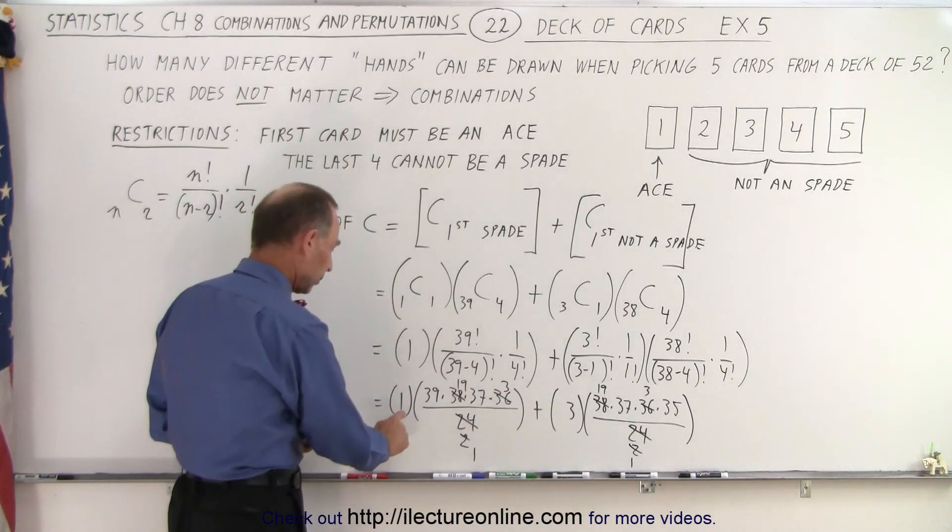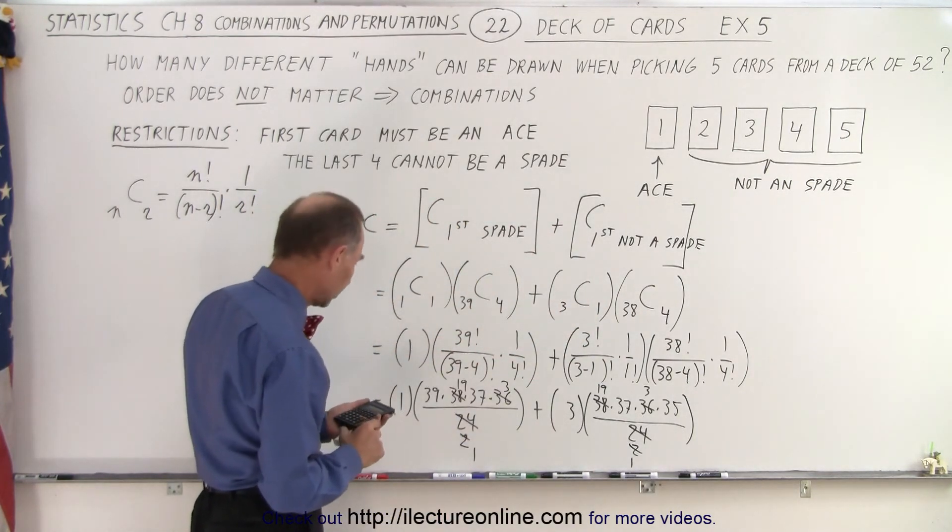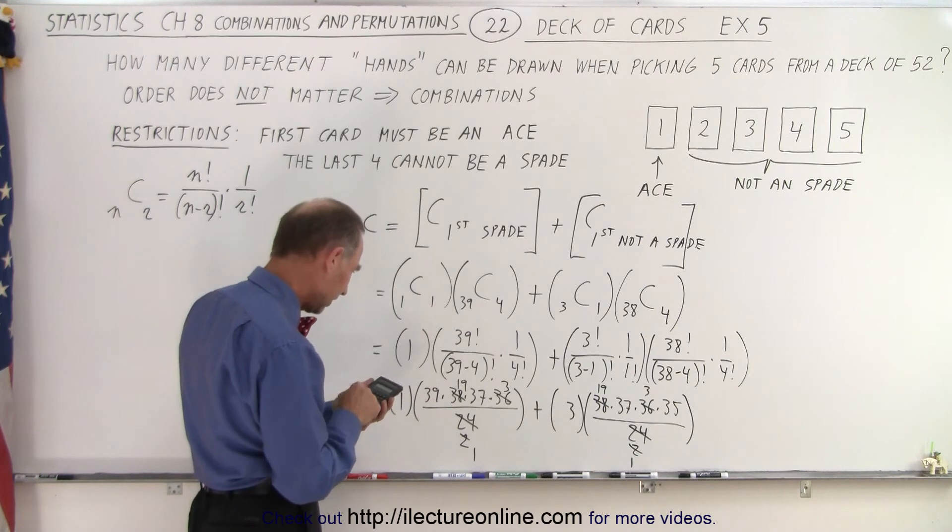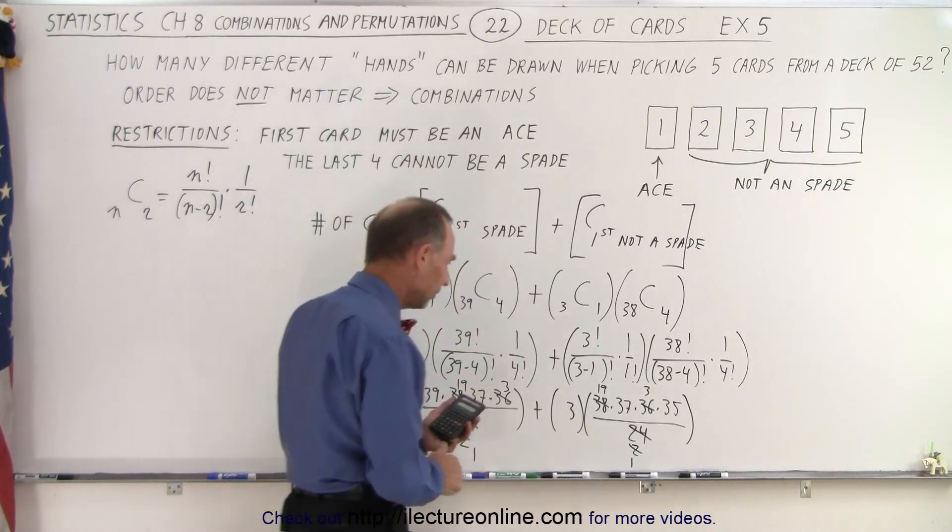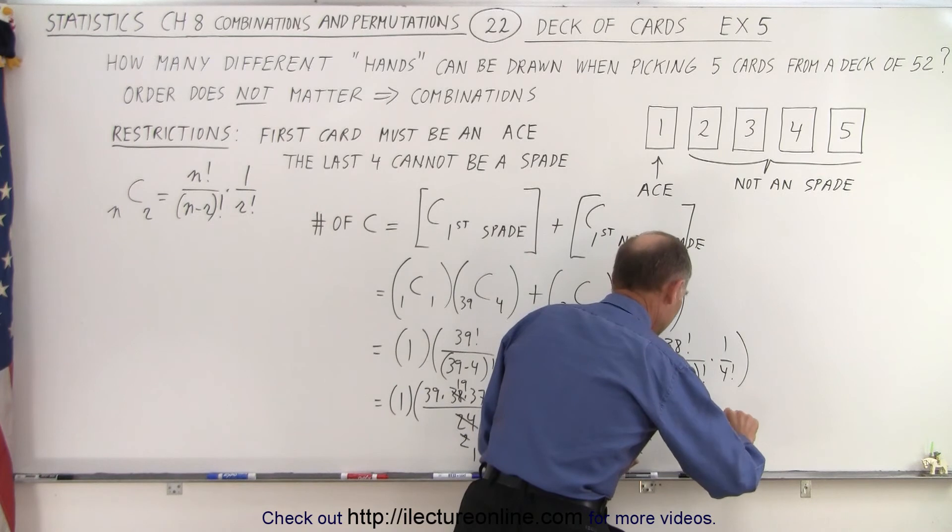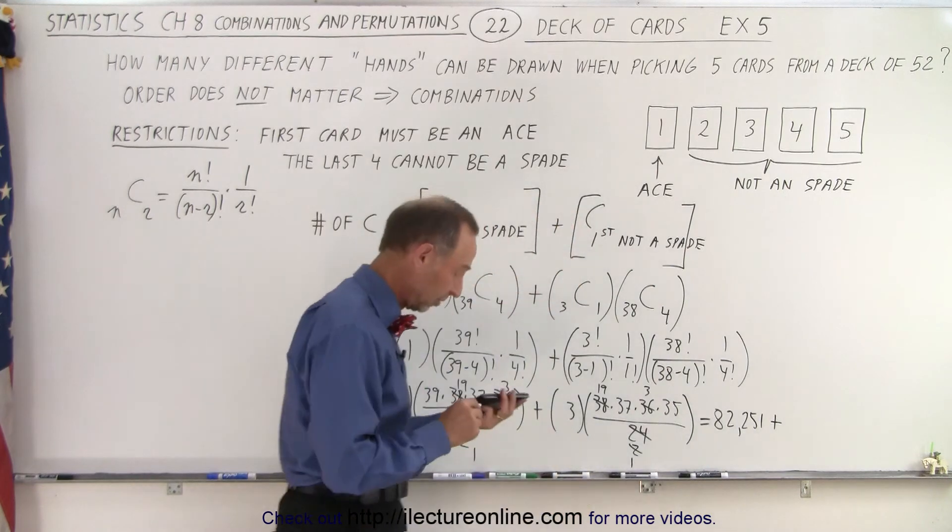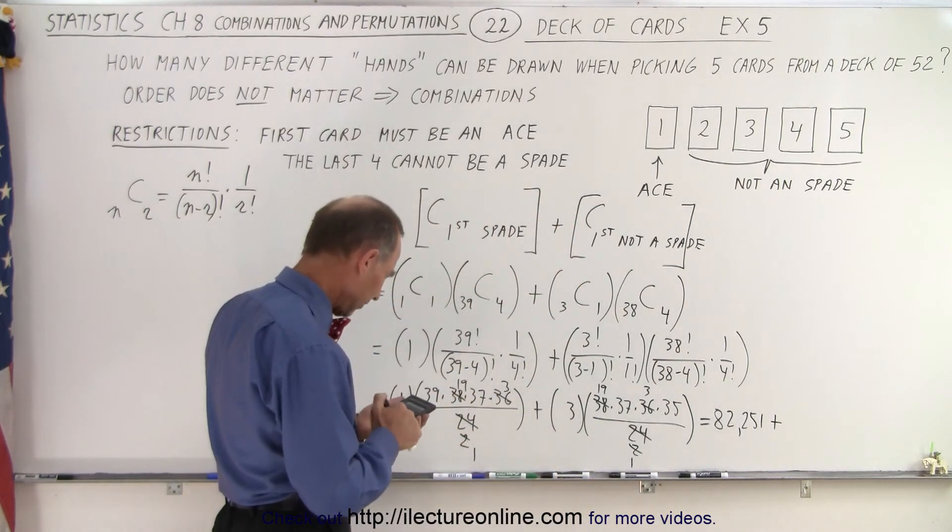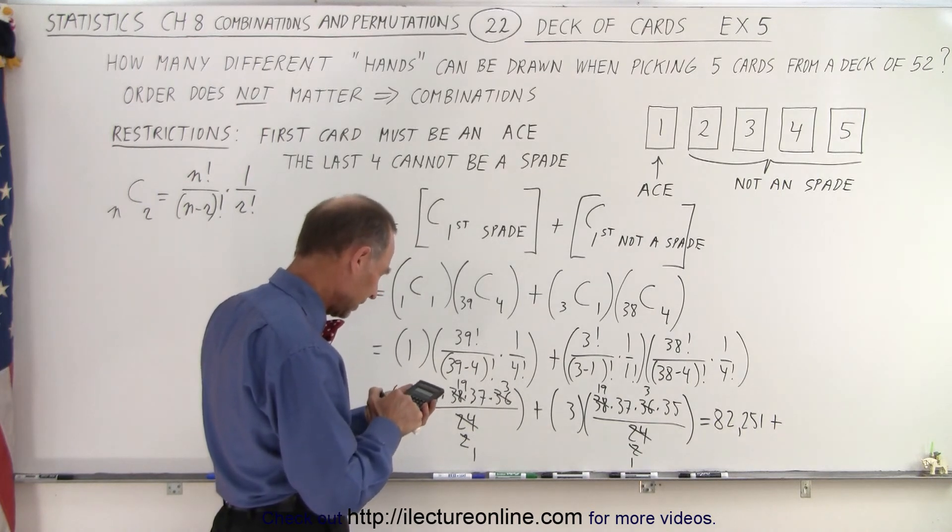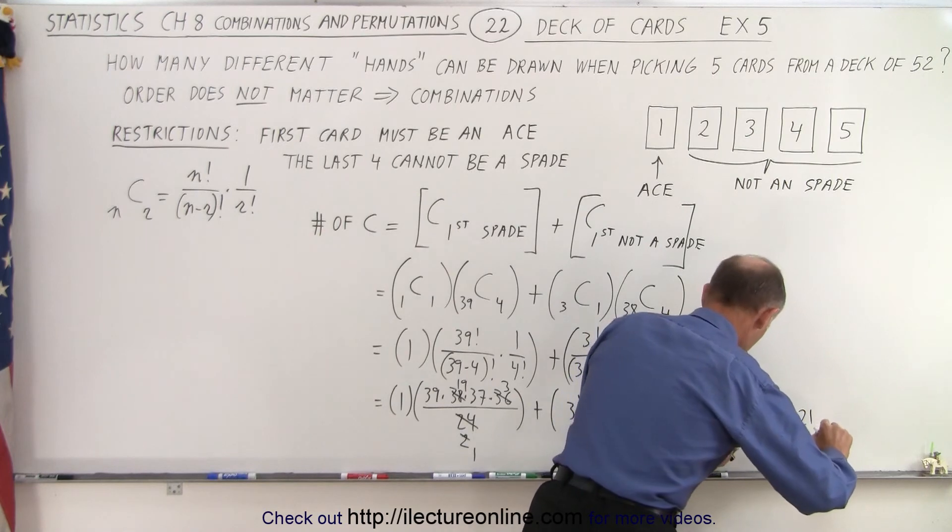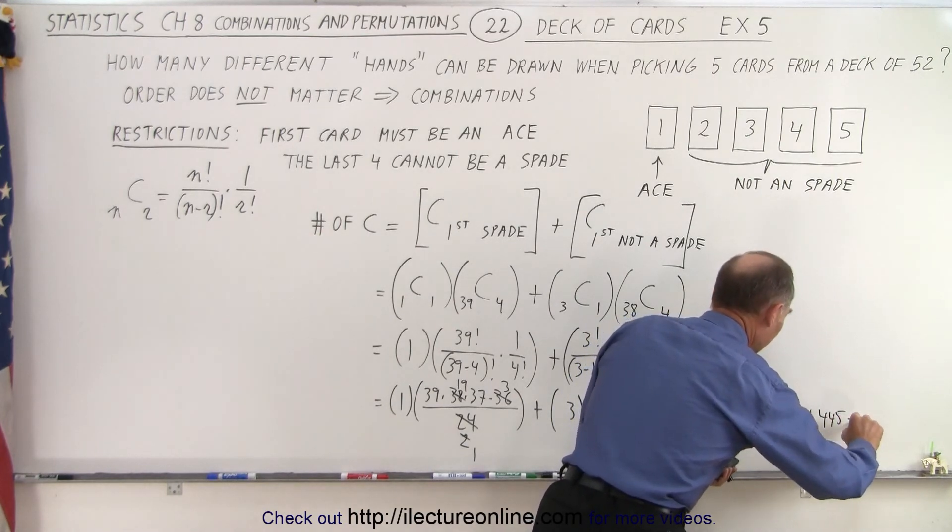In the first go around, where the first card has to be the ace of spades, we get 39, times 19, times 37, times 3, equals 82,251 possible combinations. Plus, in the second case, we have 3, times 19, times 37, times 3, times 35, equals 221,445. And then when we add them together, we get 303,696 total possible combinations.